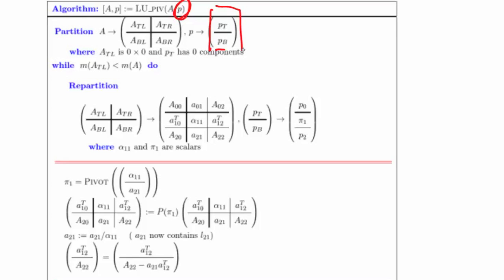And that vector we march through from top to bottom. And in the current iteration, we expose one component of that vector. And that component is going to be overwritten with an integer that indicates with which row we need to swap.